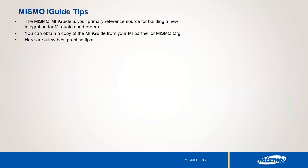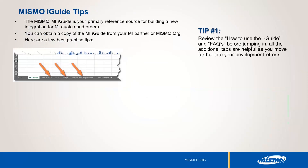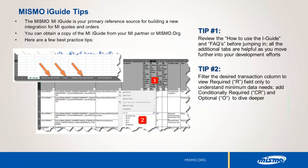Now that we've discussed some of the details, let's look at the MISMO iGuide, which is your primary reference source for building a new integration for MI rate quotes and MI orders. You can obtain a copy of the iGuide for mortgage insurance from your MI partner or through MISMO.org. Start with the 'How to Use the iGuide' and FAQ tabs before jumping into the details. Use the Excel filter function in the desired transaction column to isolate required, conditionally required, and optional data elements. MI rate quote transactions require less data than MI orders, so start with the rate quote and work your way up.